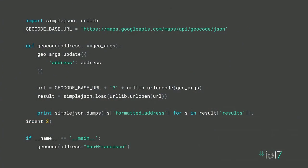Here's an illustration of making a request to our geocoding web service using Python, where the formatted address results are being displayed to our user in an array.